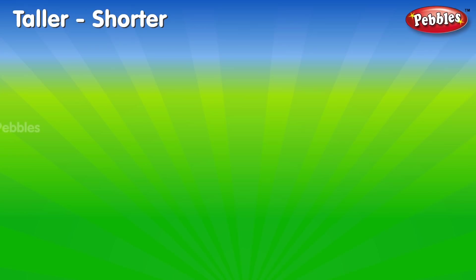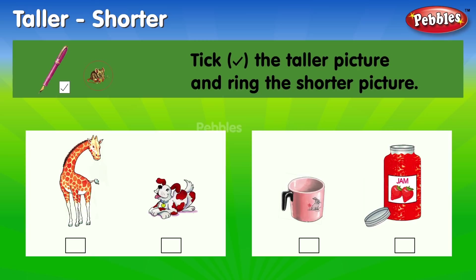Taller, shorter. Tick the taller picture and ring the shorter picture.